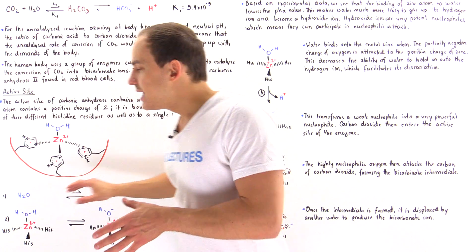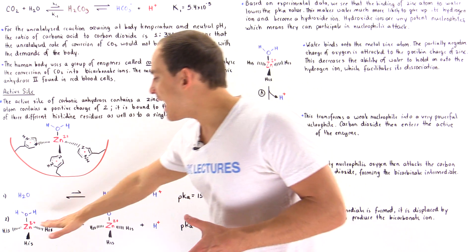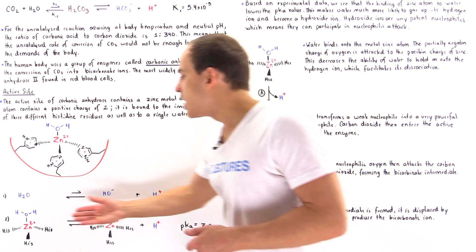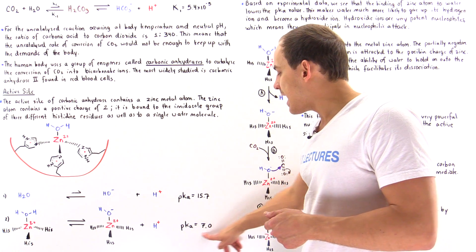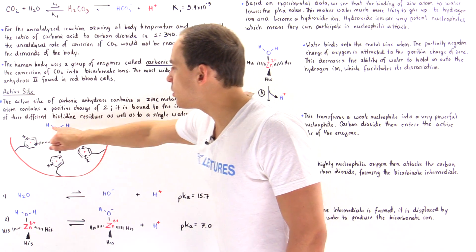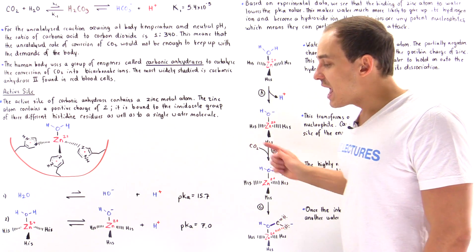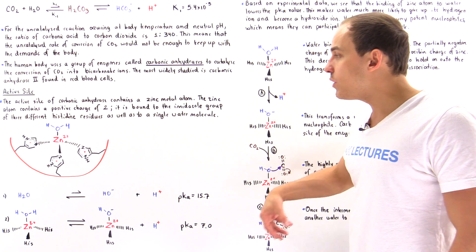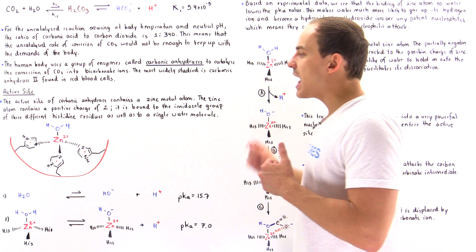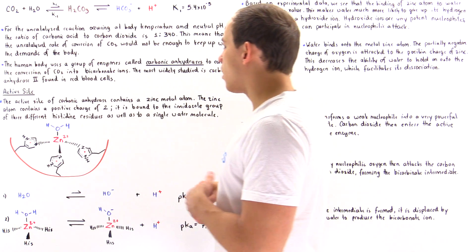What the zinc binding does is that because of this association, the dissociation of that H+ ion to form the hydroxide and H+ greatly increases, and so the pKa value decreases. Because of this interaction between the zinc atom and water, we basically decrease the pKa value of this reaction. By decreasing the pKa value, we make it much more likely that water will dissociate and produce that hydroxide, and it's the hydroxide that will be more likely to actually react with the carbon of carbon dioxide.